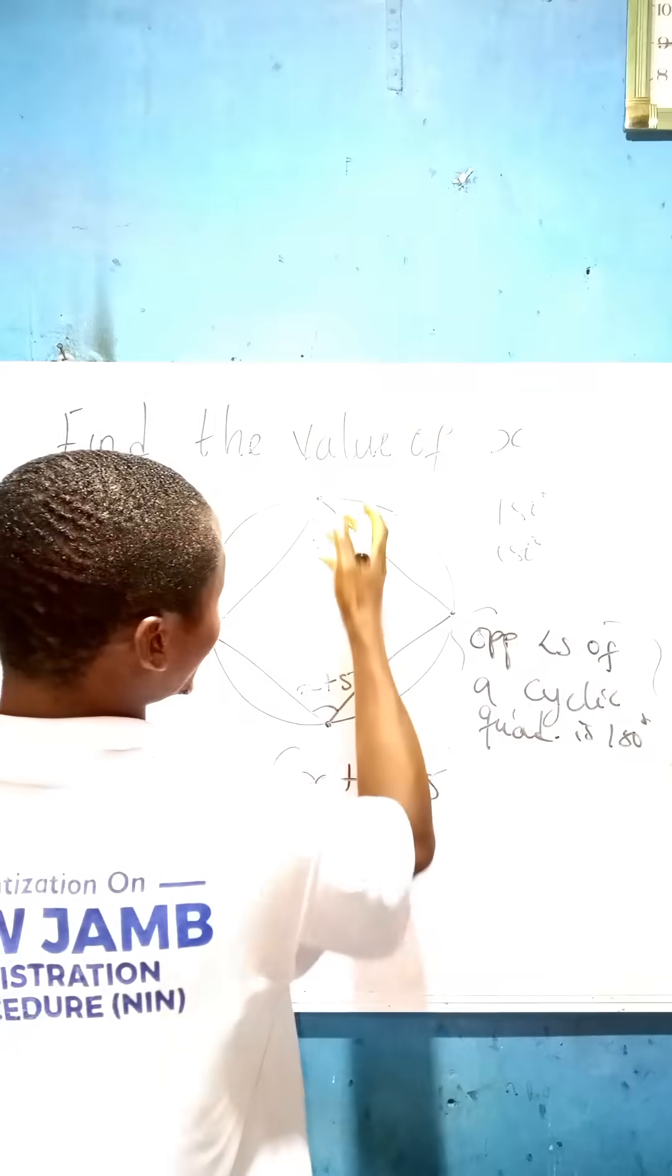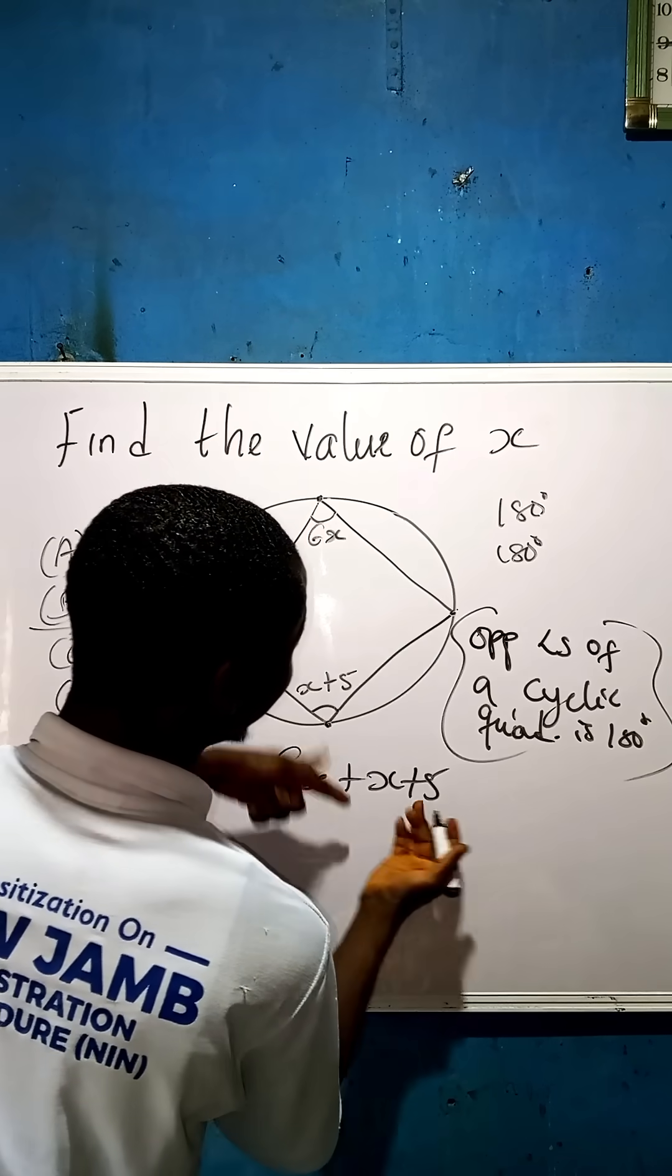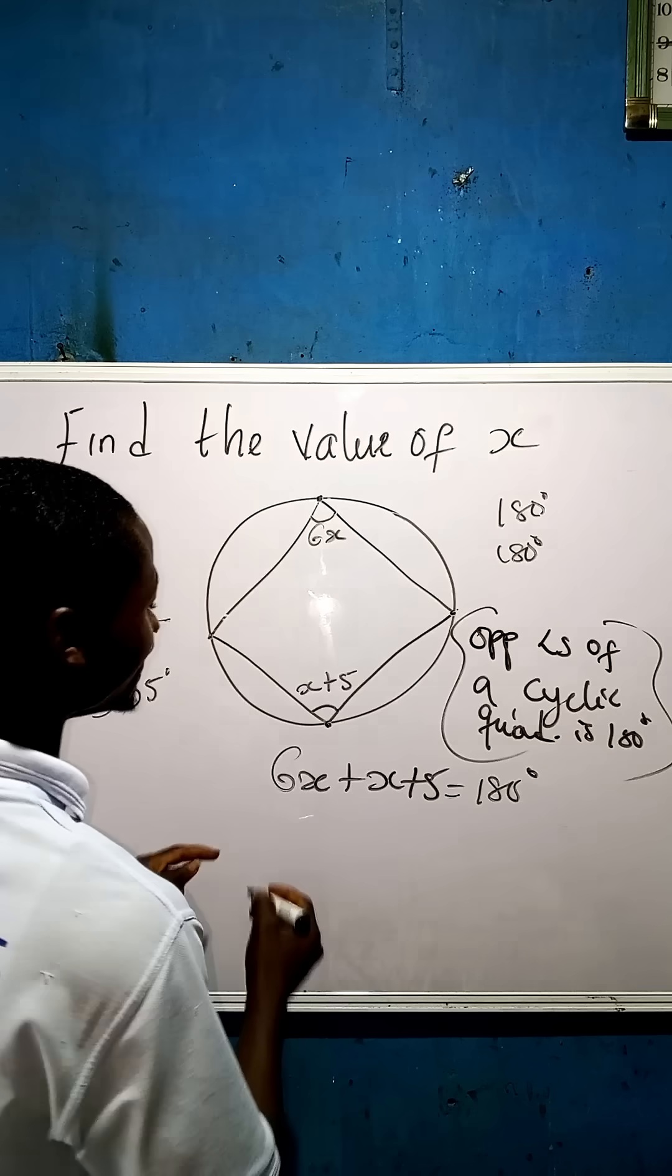But we are not making use of here. What we are concentrating is from here and here. So that was here, which is 6x plus x plus 5, equal to 180 degrees.